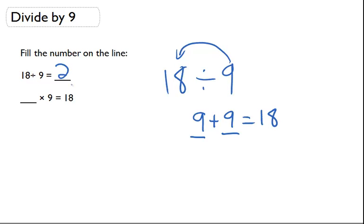And to check it we can do the opposite of division which is multiplication. 2 times 9 does give me the original 18 so I know I'm on the right track and that's the correct answer.